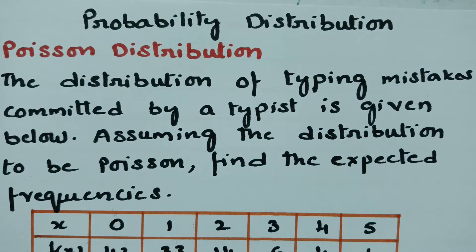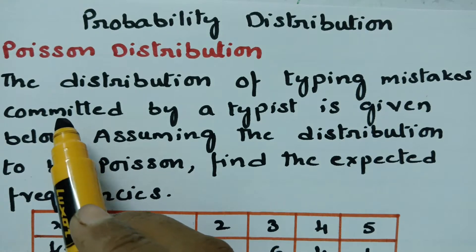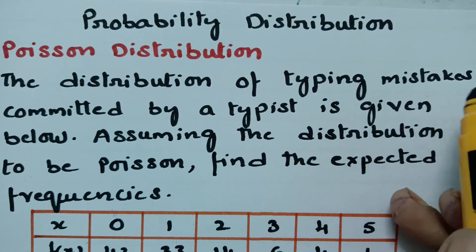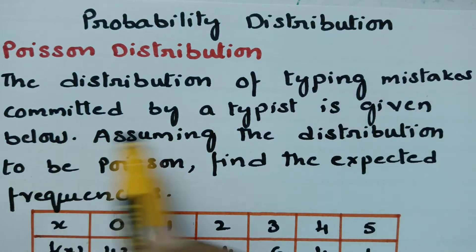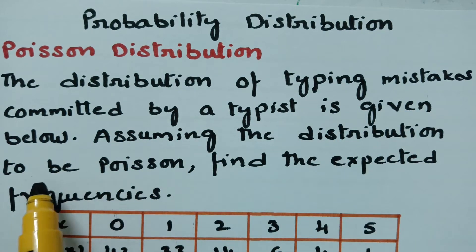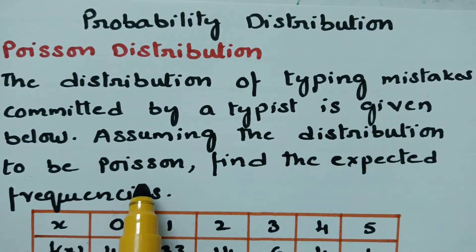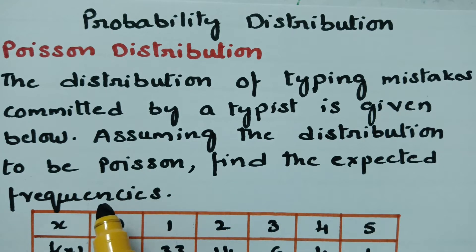This video is on Poisson distribution. In today's video, here is the problem: the distribution of typing mistakes committed by a typist is given below. Assuming the distribution to be Poisson, find the expected frequencies.